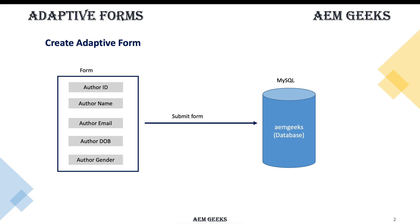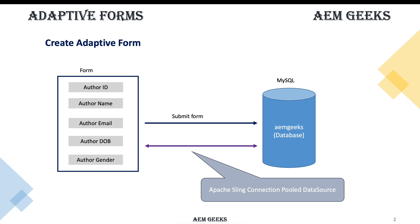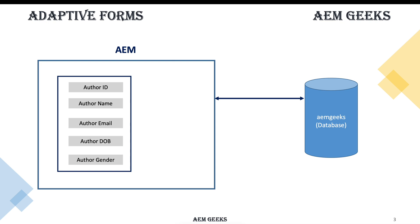My form is in AEM and MySQL is a different system, so these two systems need to know each other. AEM should know where and how to send that data. For that, we have already installed a JDBC connection bundle for MySQL in AEM, and we need to provide configuration using a factory configuration called Apache Connection Pool Data Source, so that AEM can understand how to manage and send that data.